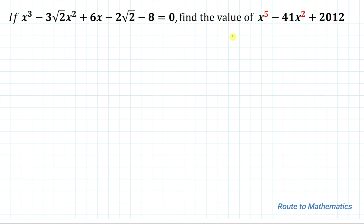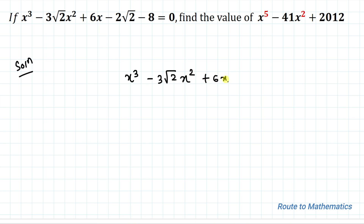So here we are asked to find the value of this given polynomial, and we have been given a cubic equation. So without any delay, let's start the solution. We have given x³ - 3√2·x² + 6x - 2√2 - 8 = 0.